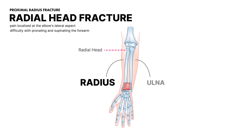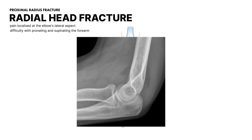The patient's heightened pain during forearm rotation is explained by the role of the radial head and proximal radio-ulnar joint in controlling this movement. The absence of clear fracture lines on the initial x-ray is not uncommon in radial head fractures, as these fractures can often be occult. They may present an anterior fat pad sign on the x-ray, which indicates joint effusion or hemarthrosis.